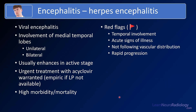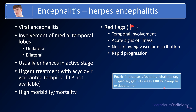This was a case of herpes encephalitis — a viral encephalitis that really favors the medial temporal lobes, can be unilateral or bilateral. In the active stage it will often enhance, but doesn't have to. Urgent treatment with acyclovir is warranted, and you should get that started at your earliest sign of suspicion. The temporal involvement, acute signs of infection, the fact that it doesn't follow a vascular distribution, and rapid progression are all things that should make you think encephalitis over tumor.